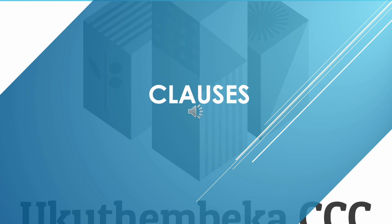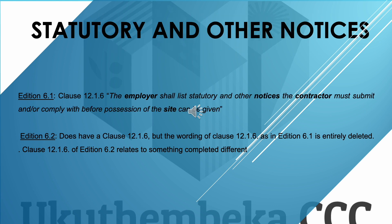Looking at two clauses that disappeared completely in Edition 6.2: the first deals with the employer identifying services connections. Edition 6.1, clause 12.1.5, read: 'the employer shall identify access to water, sewer, storm water, and/or electricity connections to the site.' In Edition 6.2, clause 12.1.5 exists but its wording relates to something completely different — the Edition 6.1 wording on services connections is entirely deleted.